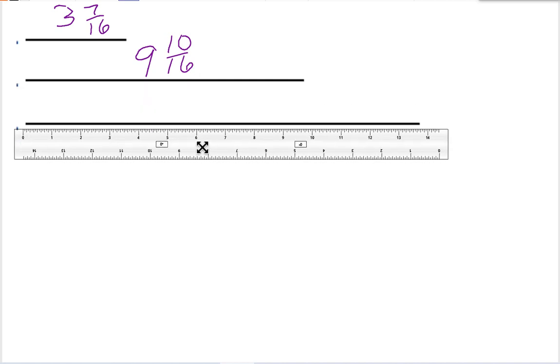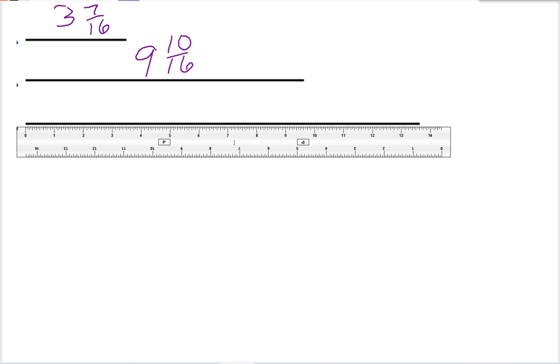And, my last line goes all the way up past 13. So, it's going to be 13 and then we count again. 1, 2, 3, 4, 5, 6, 7, 8, 9, 10. So, 10 again. So, 13 and 10 sixteenths.